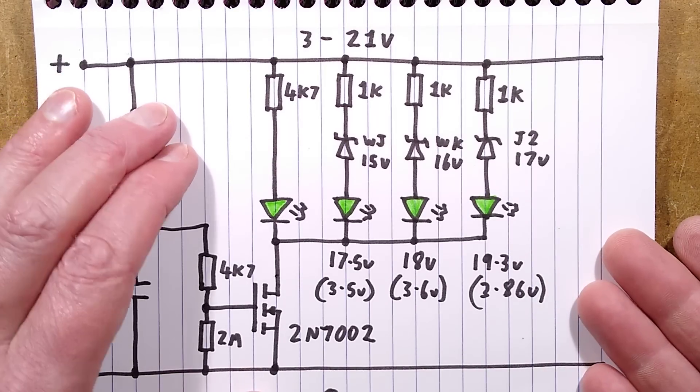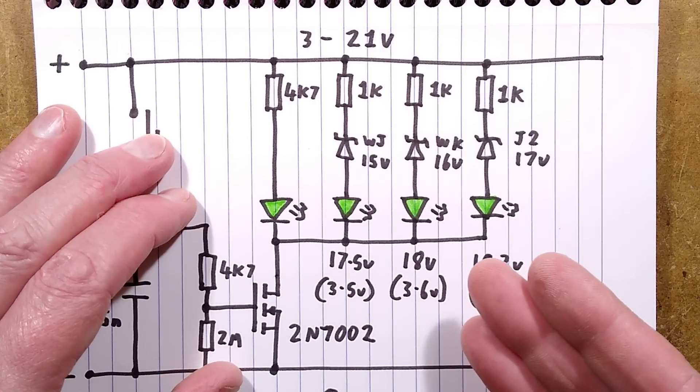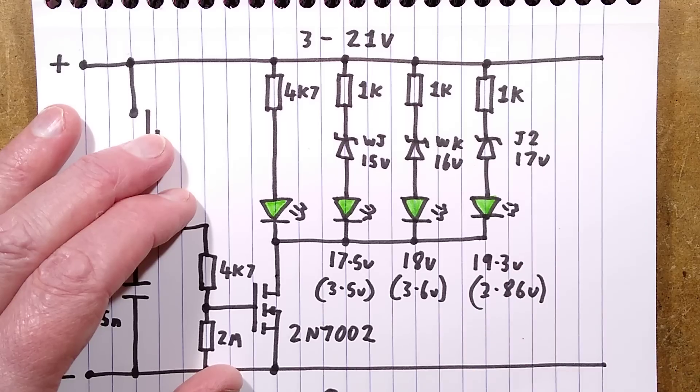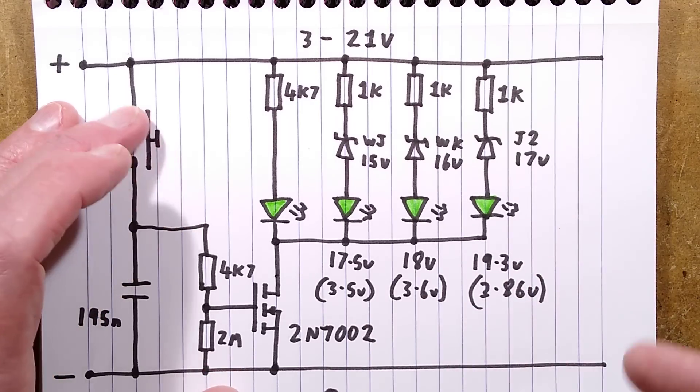It is designed for the what they call the 18 volt battery packs. The Chinese call them 21 volt battery packs because, whereas you're supposed to go with the mid voltage of lithium cells, 3.7 volts, the Chinese go for the maximum voltage, 4.2 volts fully charged, and it is just five cells that adds up to 18 volts and 21 volts respectively.